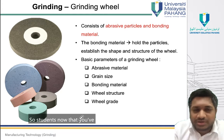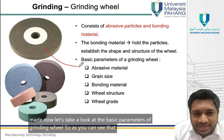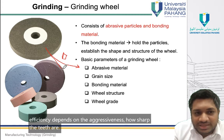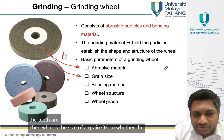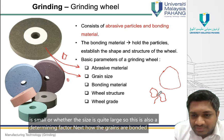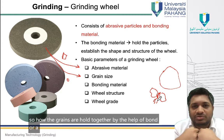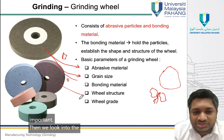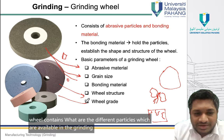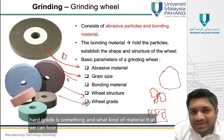Now that we've seen how a grinding wheel is made, let's look at the basic parameters of a grinding wheel. Grinding efficiency depends on the abrasiveness of the material and how sharp the teeth are, the size of the grain, how the grains are bonded together, the wheel structure, and the grade — which defines whether it is a soft or hard grade and what kind of material can be used.